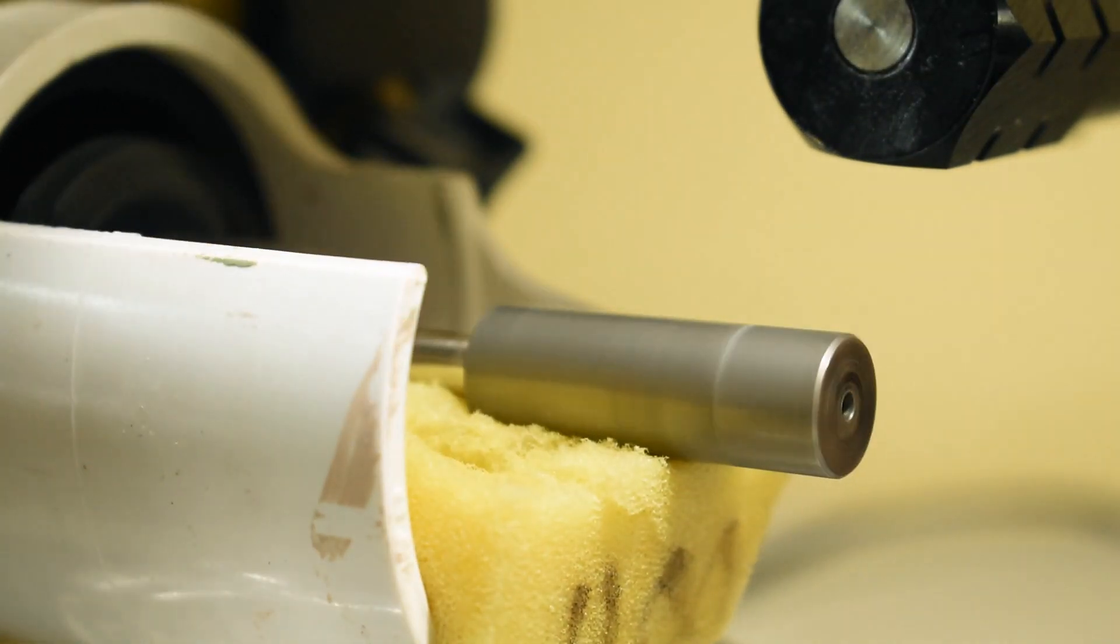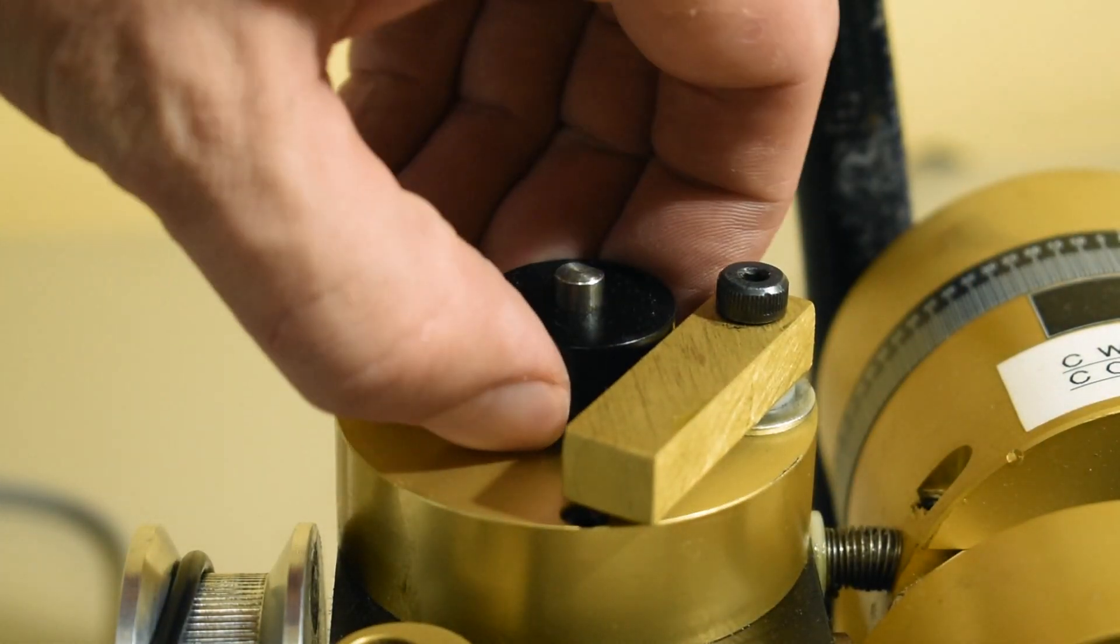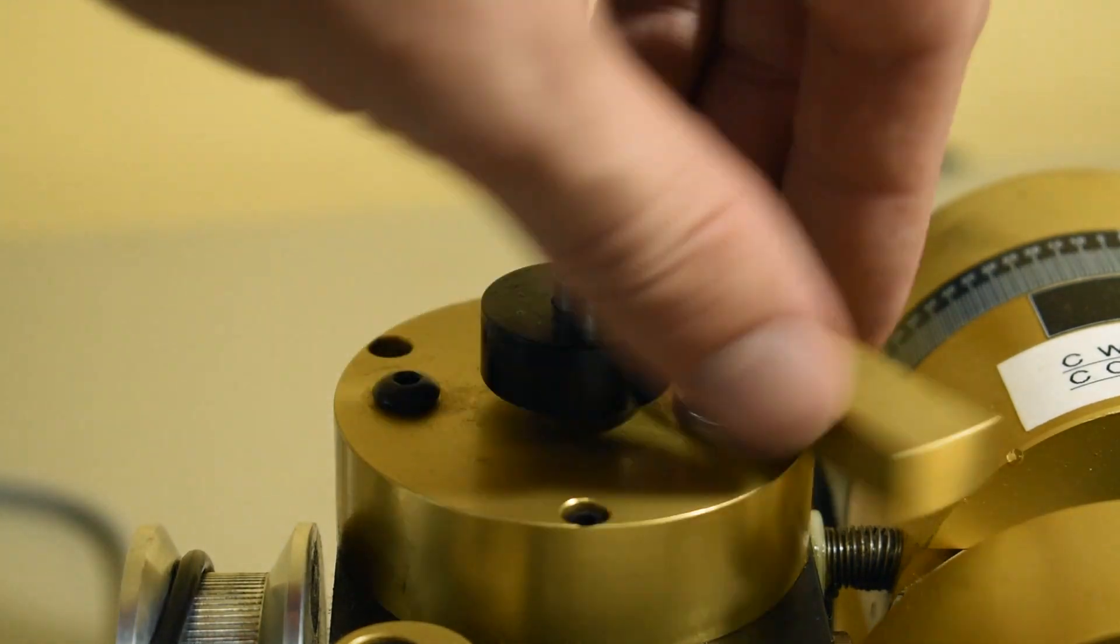This machine also has the ability for the mandrel to spin without going back and forth by lifting this black knob and placing the bar underneath.